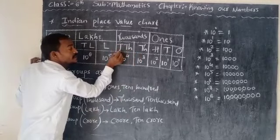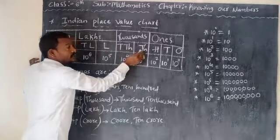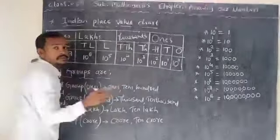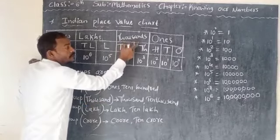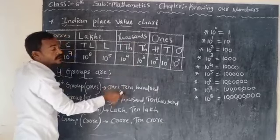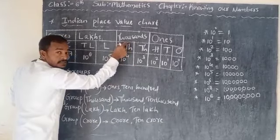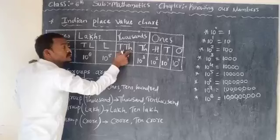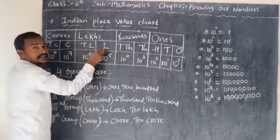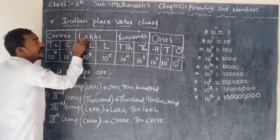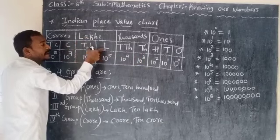In the 1000s group, the places are 1000 and 10,000. In the first group there are 3 places; in the second group there are only 2 places. The third group is the lakh group.